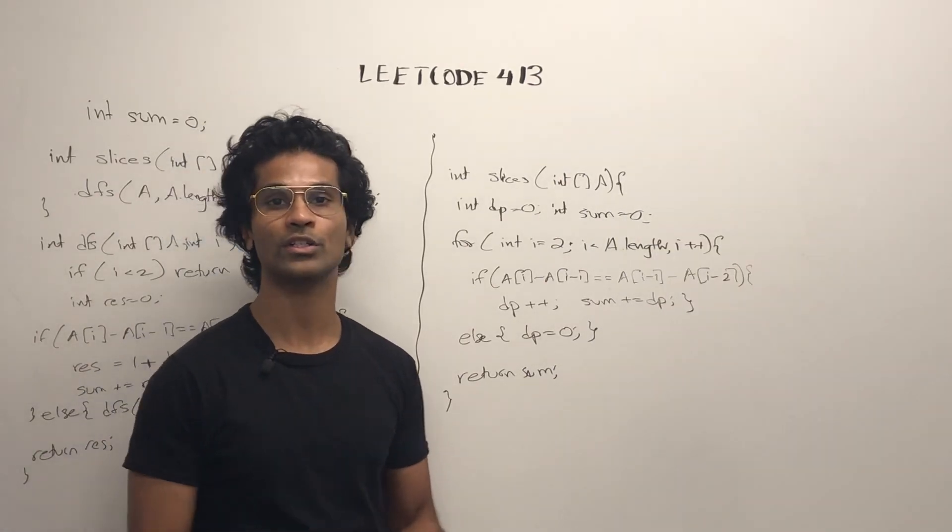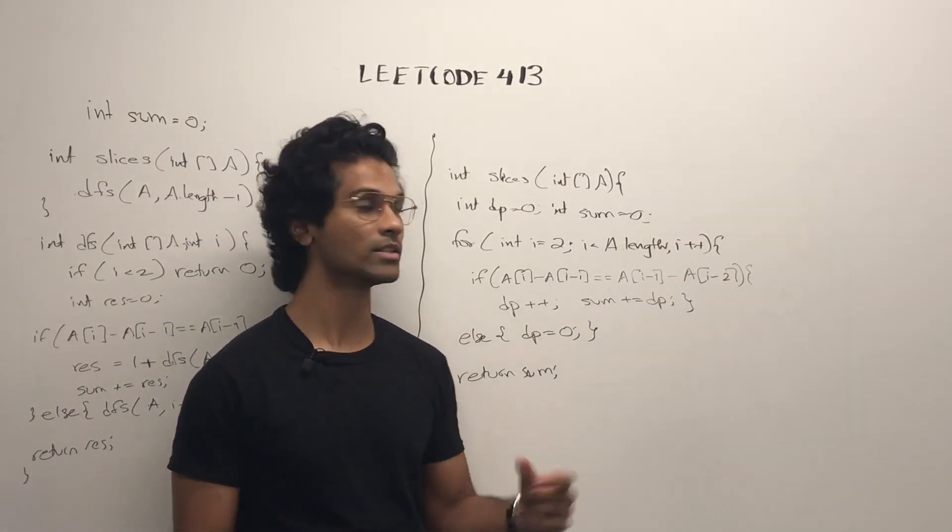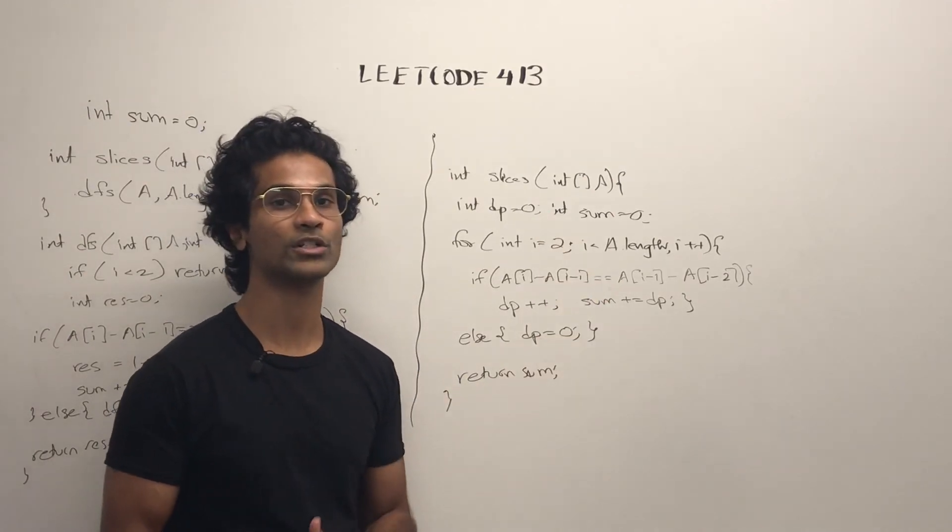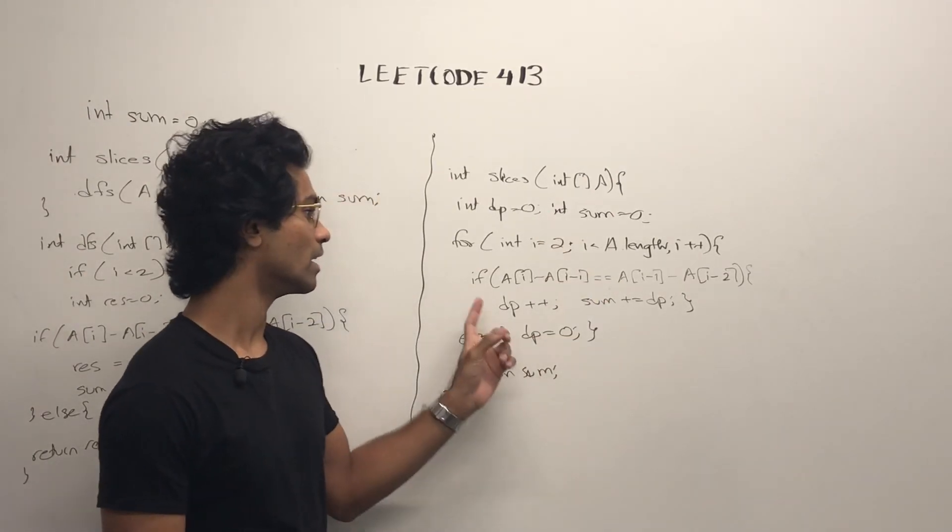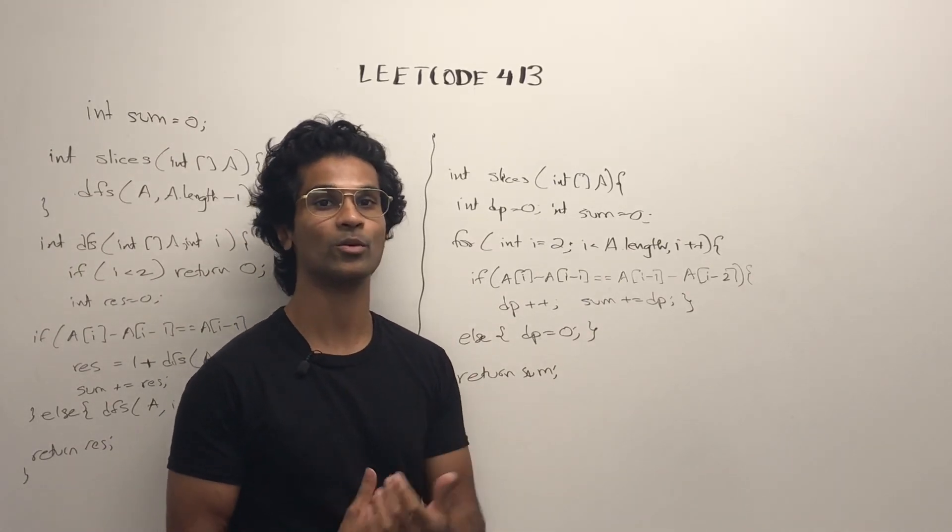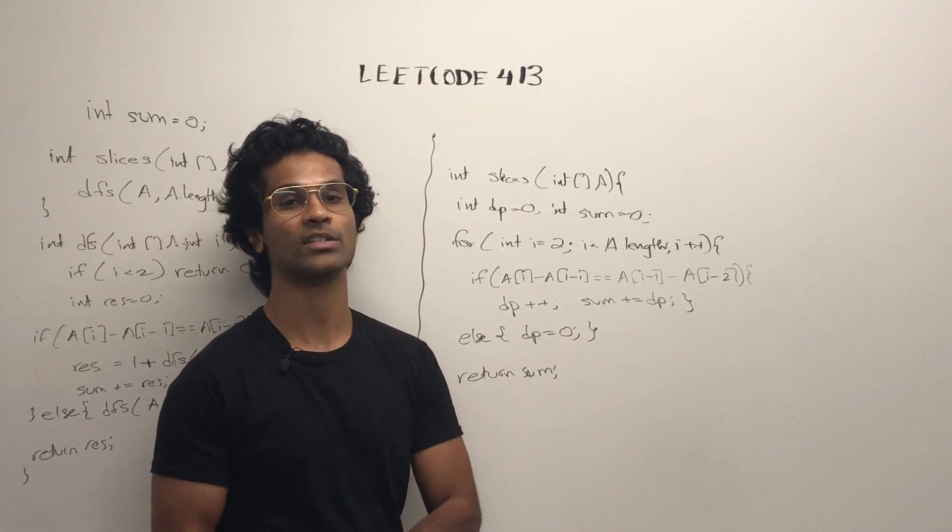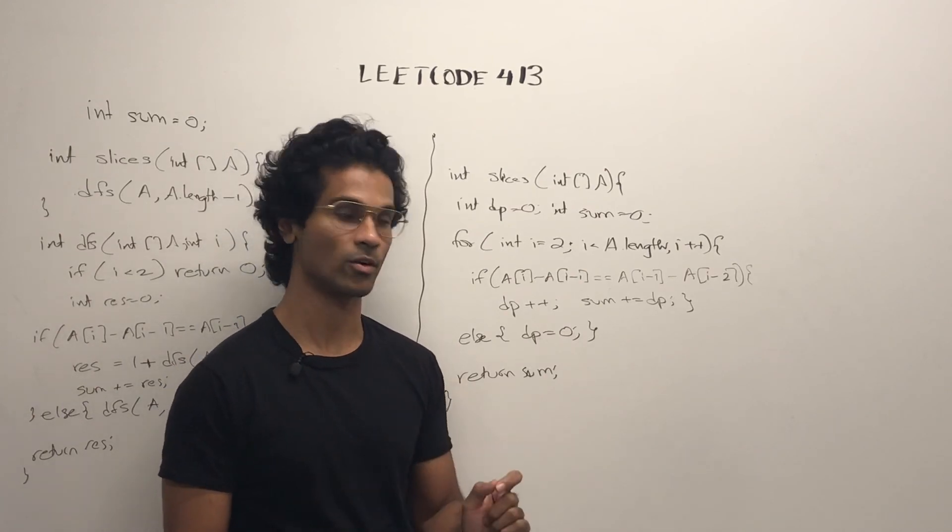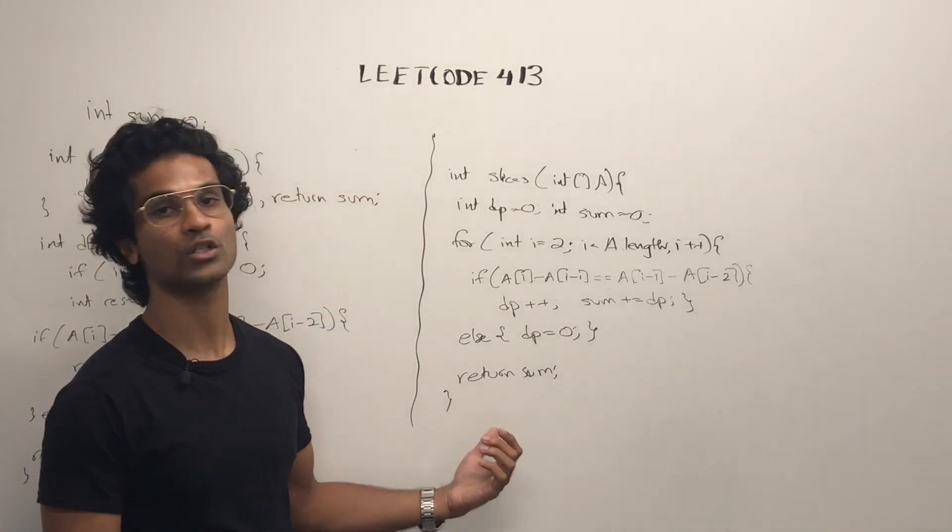For the DP code, we initialize a dp int and a sum int, which is like a global variable, and we just iterate through the array. If we have our if conditional, we do plus plus on the dp, accumulate it in the sum variable. Otherwise, we reset the dp to 0. Finally, we just return sum.